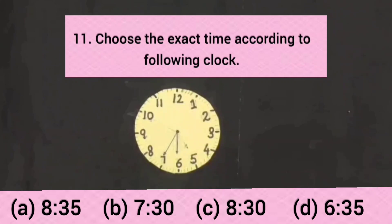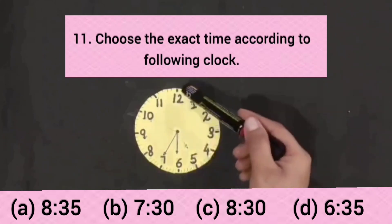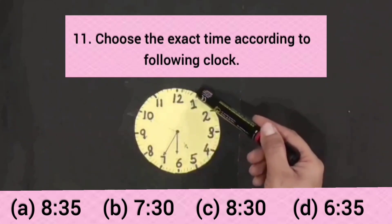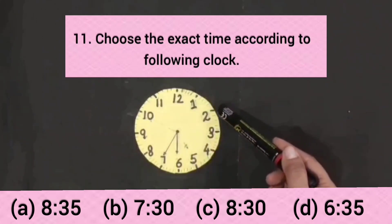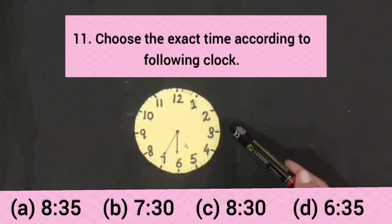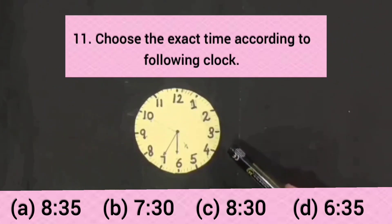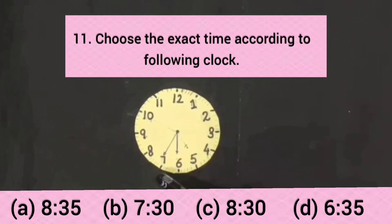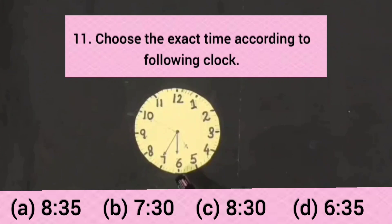Students, from 12 to 1 is 5 minutes, at 2 is 10 minutes, at 3 is 15 minutes, at 4 is 20 minutes, at 5 is 25 minutes, at 6 is 30 minutes, and at 7 is 35 minutes. So the time is 6:35.